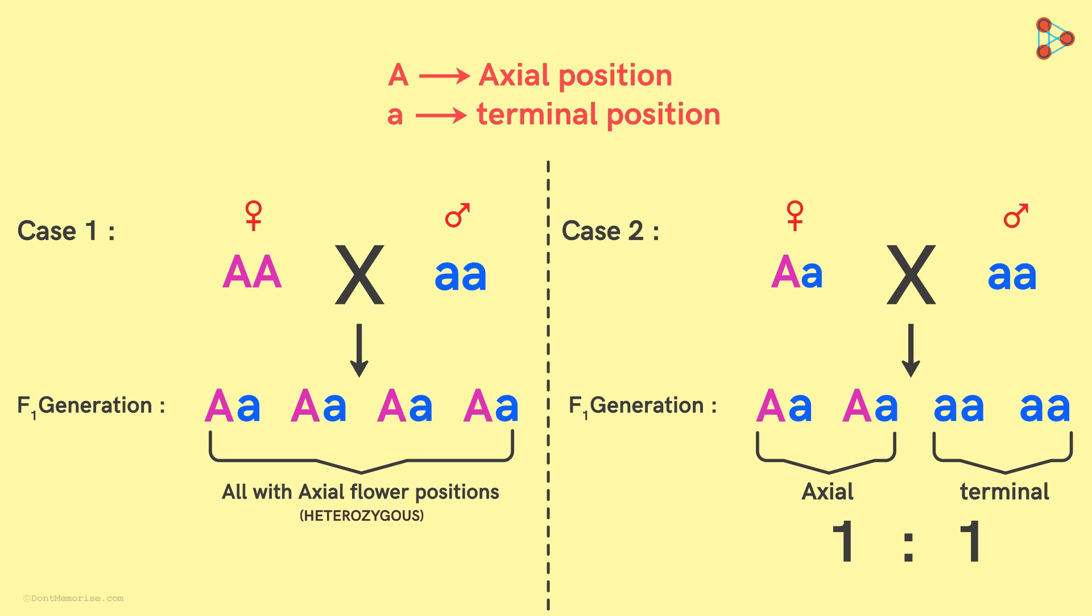Simple! We can guess the unknown genotype by looking at the results in the F1 generation! If we cross our plant with the plant having a recessive phenotype, and we get all the plants with flowers in the axial position,